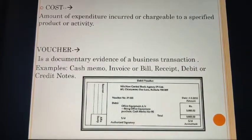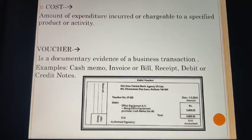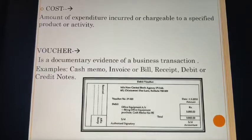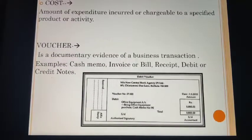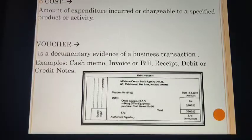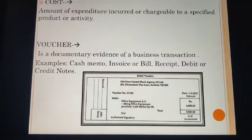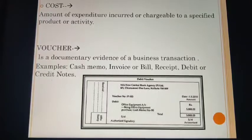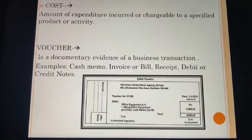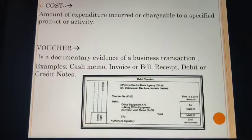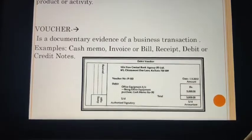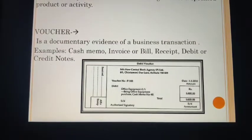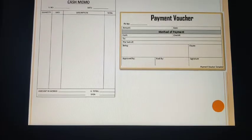Next comes voucher, a very important basic accounting term on which our whole accounting and transactions depend. A voucher is a documentary evidence — that is, a proof of a business transaction. Examples include cash memo, invoice or bill, receipt, debit or credit notes, etc. On the basis of this you know a transaction has taken place, and on that basis we record entries in our books of accounts, then classify and summarize it.